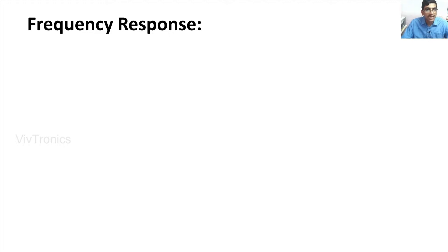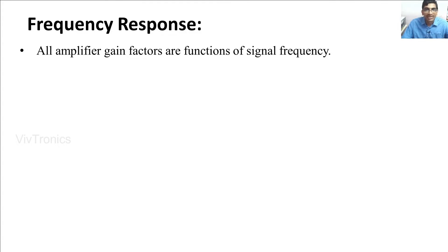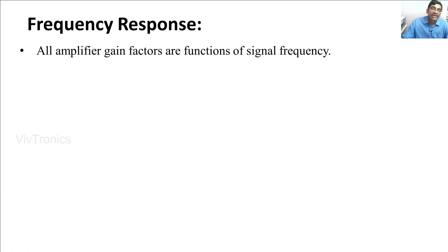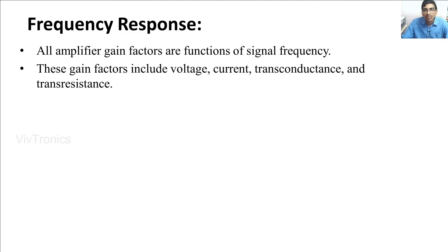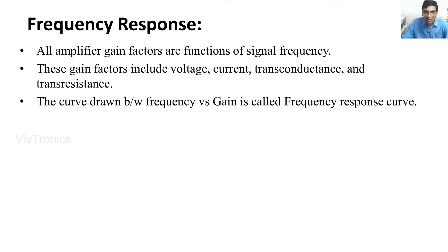Let us start with the frequency response. The frequency response is a graph that shows the relationship between input frequency and gain of the amplifier circuit, because the amplifier gain is a function of signal frequency — it is not constant. It varies with the operating frequency, so for different operating frequencies we may get different amplification factors. The gain factors include voltage, current, transconductance, and transresistance. The curve drawn between frequency versus gain is called the frequency response curve.